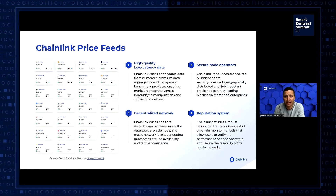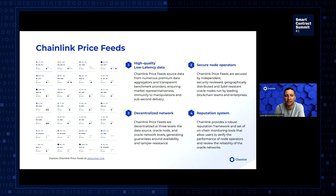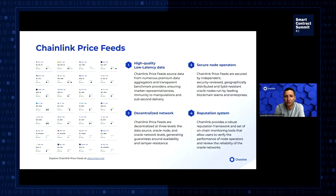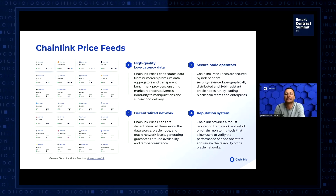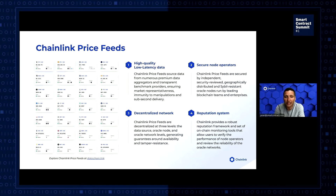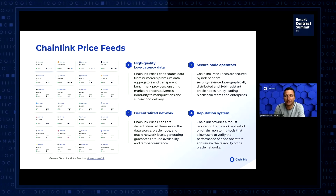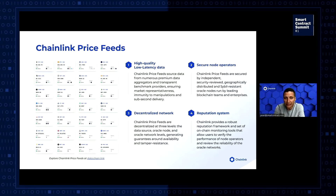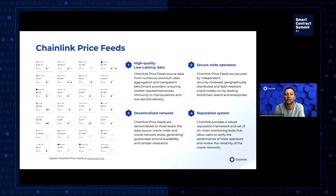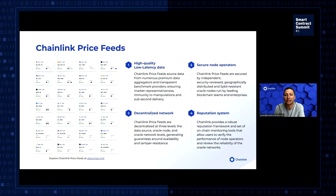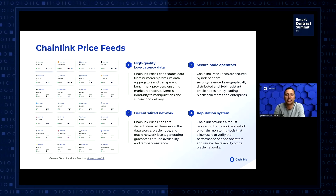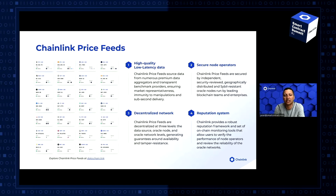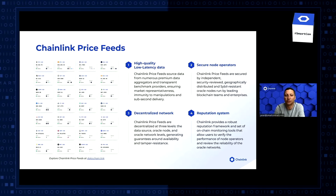Chainlink provides the industry standard price feeds securing the vast majority of the value locked within DeFi, with currently over 30 billion secured. These price feeds continue to grow in speed as we are able to provide sub-second price updates without compromising on the quality of the data, its market representativeness, and the data sources that we use. Price feeds would not be able to be delivered securely without the decentralized computation of prices through independent nodes that are read day and night by leading blockchain teams and enterprises. We already integrate with Ethereum, BSC, Polygon, XDAI, Huobi, and Avalanche and are continuously building more integrations.